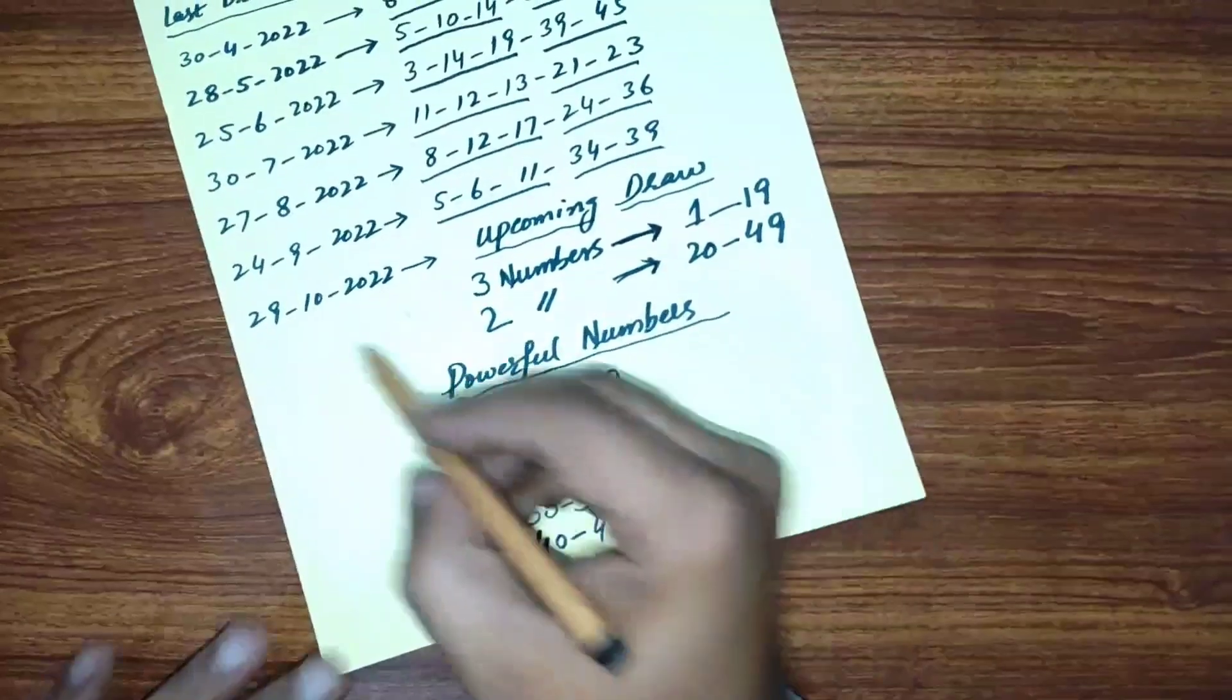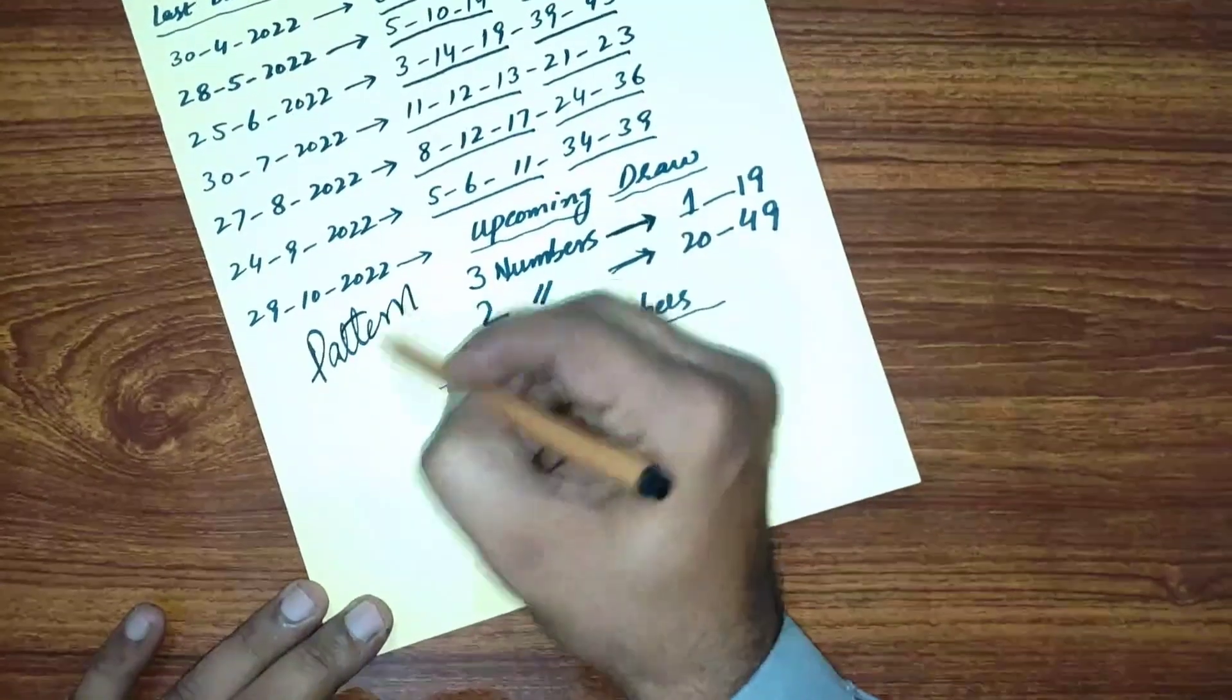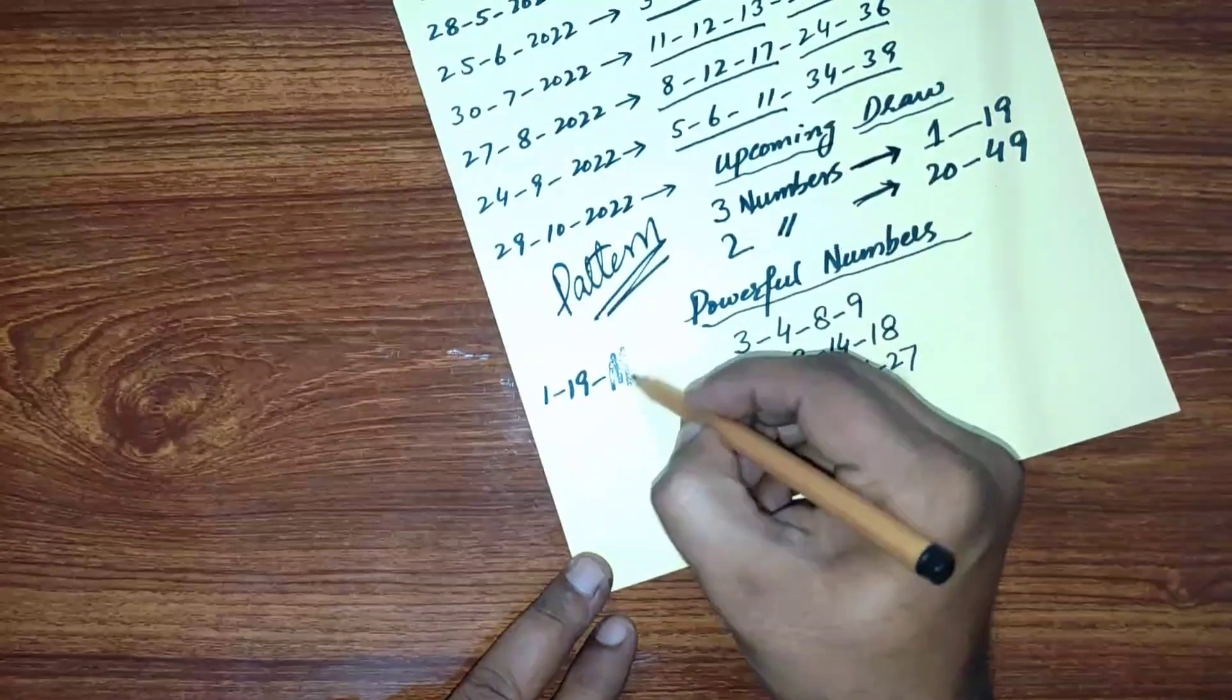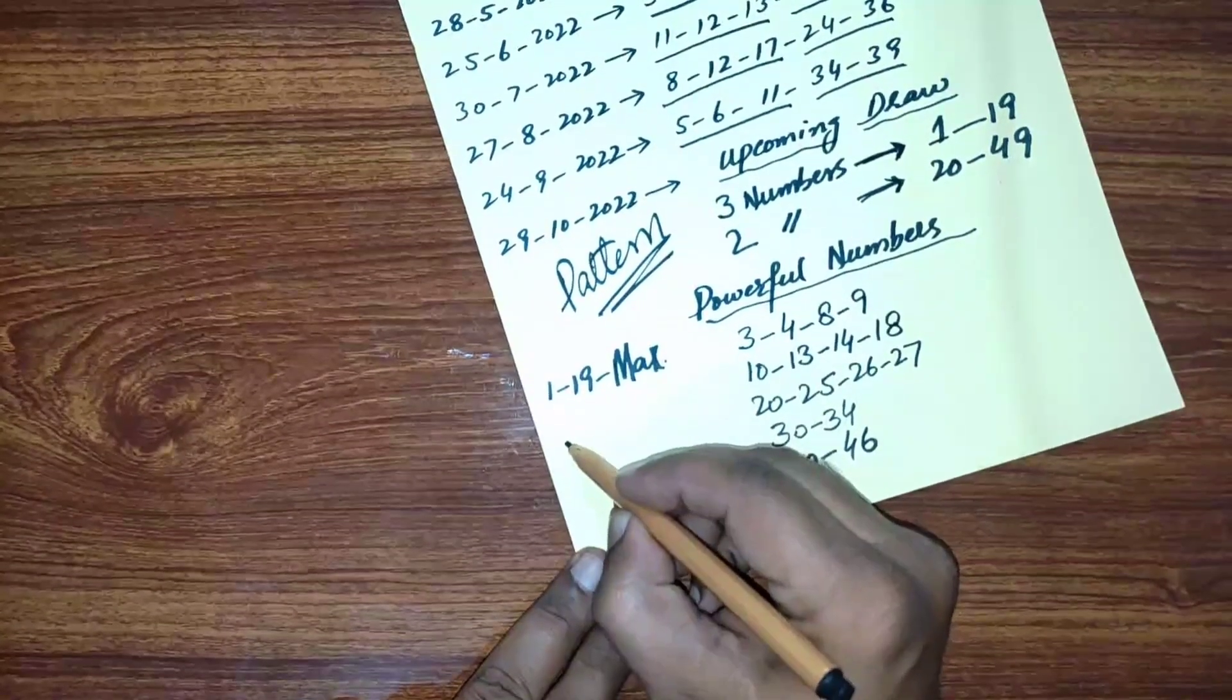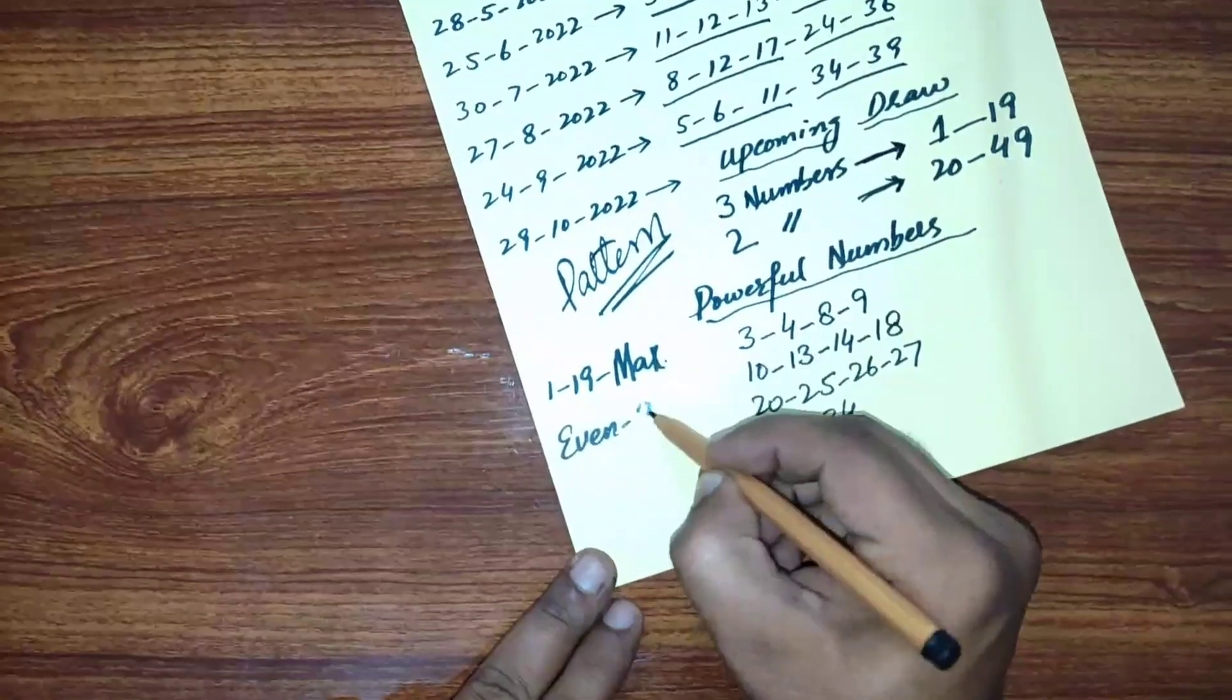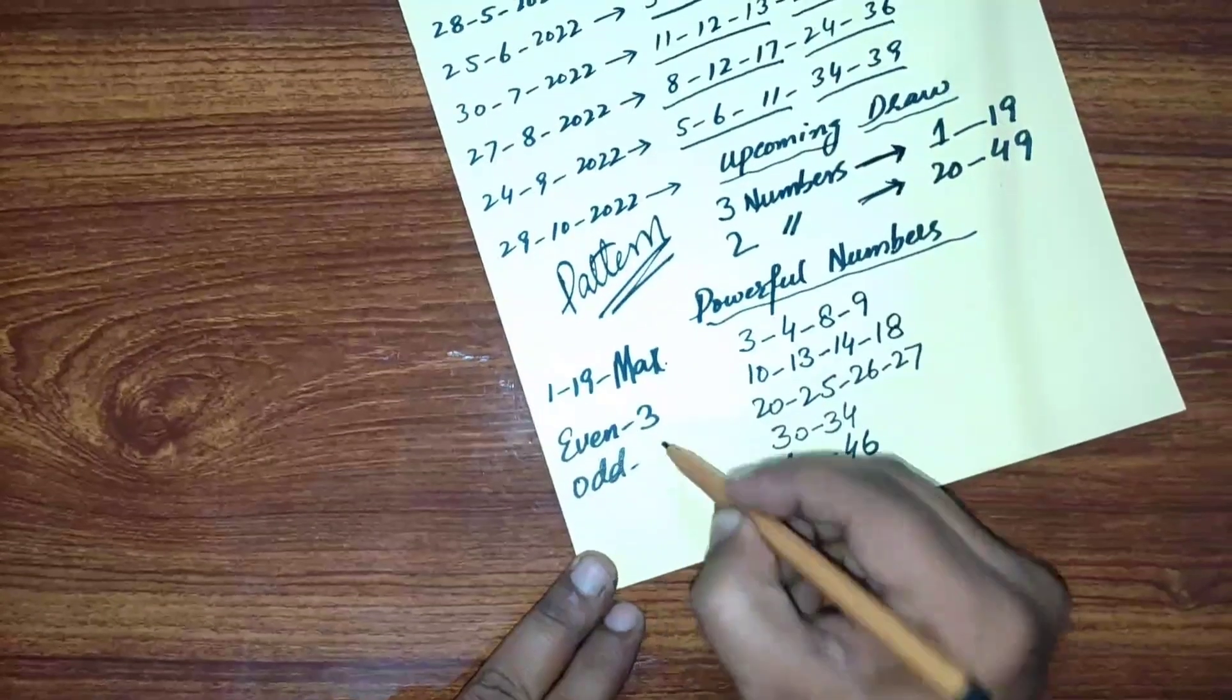This is the best pattern, the right pattern. You should select maximum numbers from 1 to 19, with maximum numbers being even: three even numbers and two odd numbers.